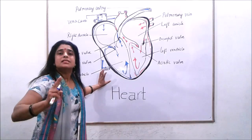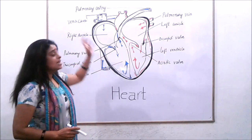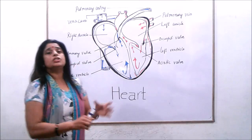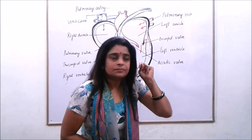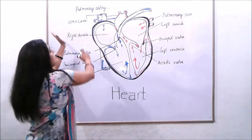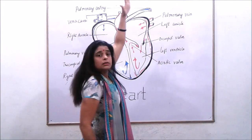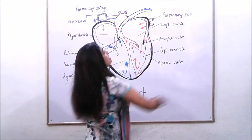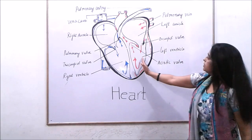This mechanism is repeated 72 times per minute and is known as double circulation. It is called double circulation because blood passes through the heart twice in one cycle: first from the right auricle to the right ventricle, then to the pulmonary artery for oxygenation, and then back to the heart at the left auricle, from the left auricle to the left ventricle, and out through the aorta.